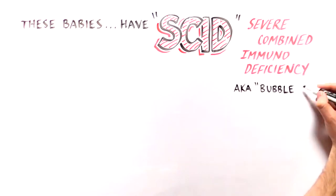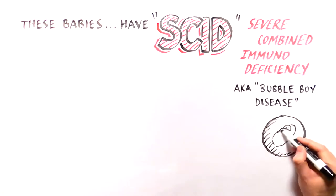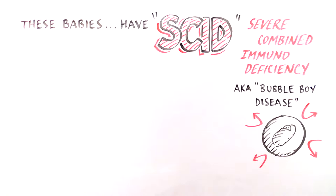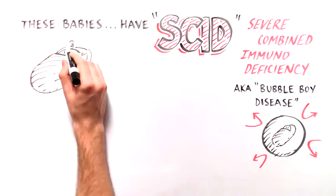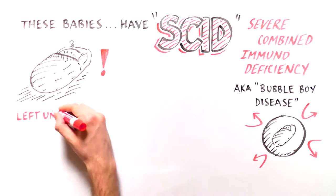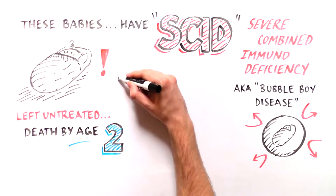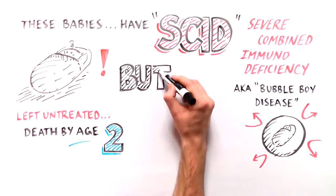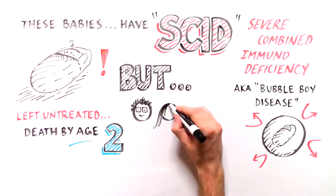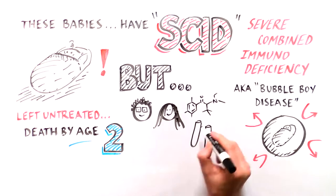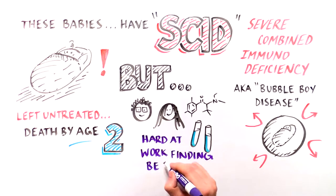SCID is commonly known as bubble boy disease, because at one time the only way to manage the disease was to isolate the sick child in a sterile environment. Left untreated, SCID babies typically die within their first two years of life. Fortunately, researchers have worked hard trying to fix the immune systems of SCID babies and continue to develop better stem cell transplant strategies to cure SCID.